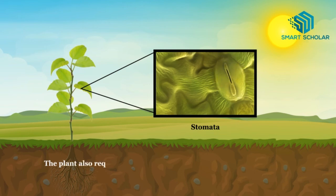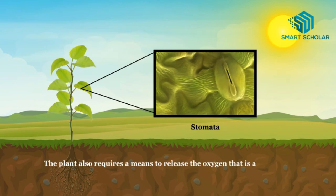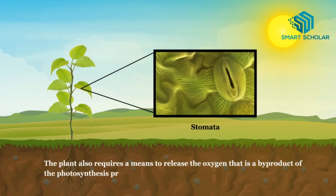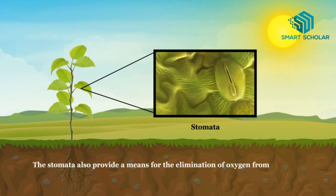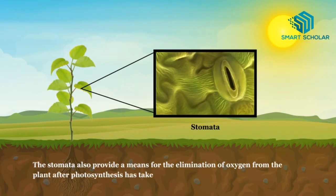The plant also requires a means to release the oxygen that is a by-product of the Photosynthesis process. The stomata also provide a means for the elimination of oxygen from the plant after Photosynthesis has taken place.